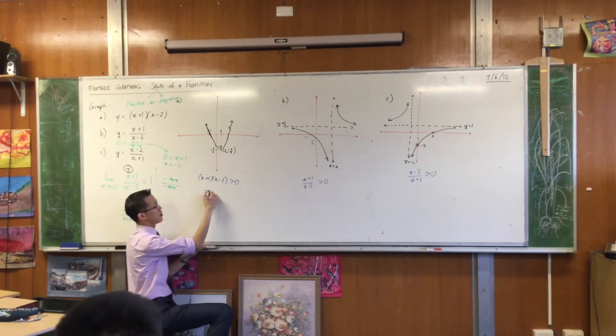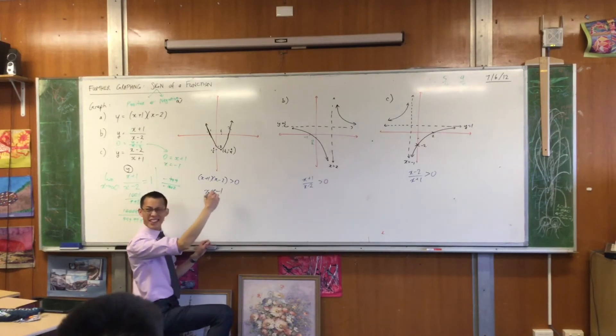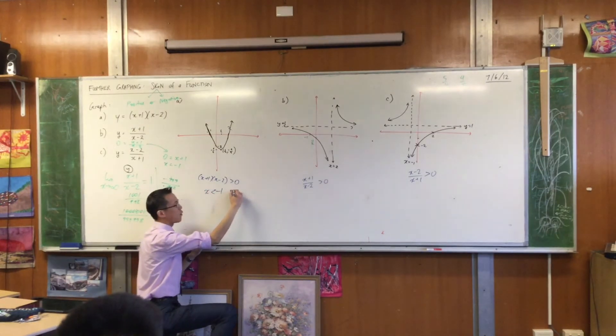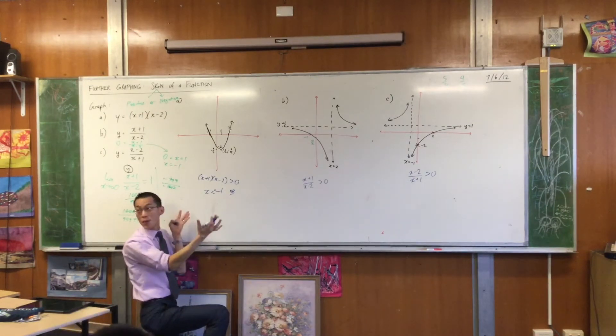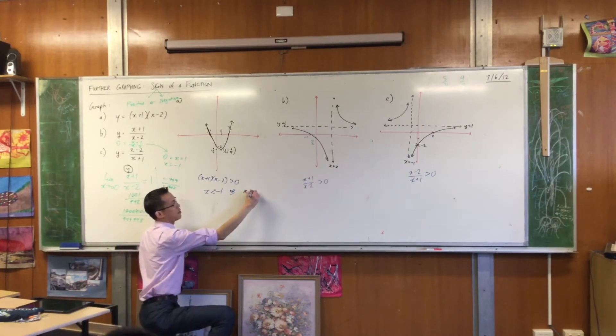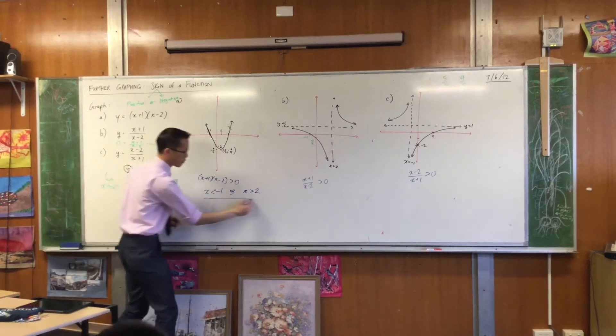When x is less than -1 and when x is greater than 1. And? Or. Why or? We talked about this before. Because you can't have a single number that's both of those at the same time. So this or this. Are you happy with that? So I'm just going to put a box around that.